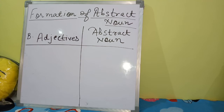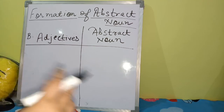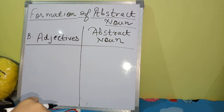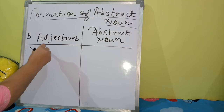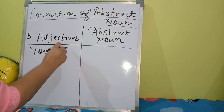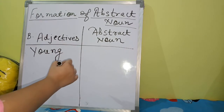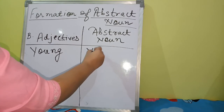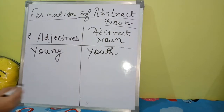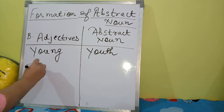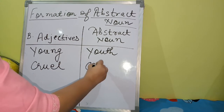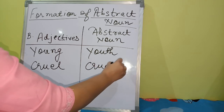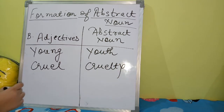Now we will see how to form abstract nouns from adjectives. From the adjective 'young,' the abstract noun formed is 'youth.' From the adjective 'cruel,' the abstract noun formed is 'cruelty.'